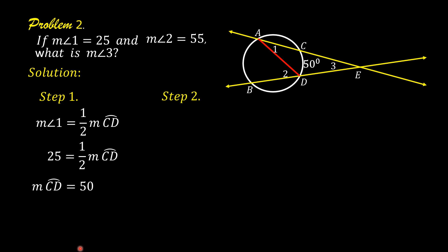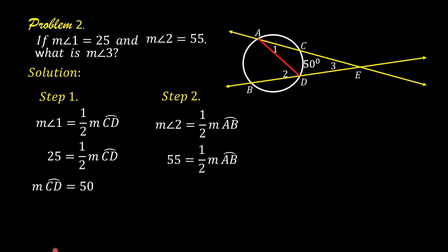Step number 2: the measure of angle 2 is equal to one-half the measure of arc AB. The measure of angle 2 is given as 55, so substitute 55 for the measure of angle 2. We have 55 is equal to one-half the measure of arc AB. Cross multiply: the measure of arc AB is equal to 110.